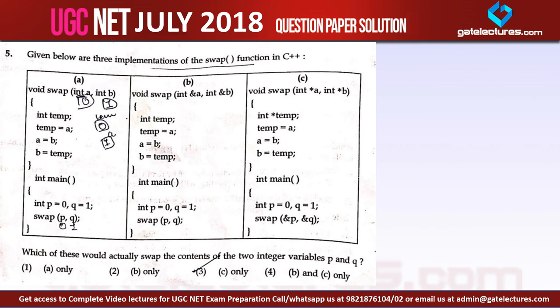What I have done is I have created three programs here to explain how option A is wrong, what option B is saying, and what option C is saying — in which cases parameter passing actually changes the values. They are saying that given below are three implementations of the swap function in C++. Which of these would actually swap the contents of the two integer variables P and Q?